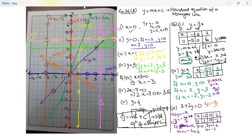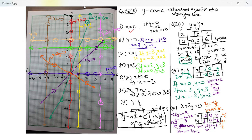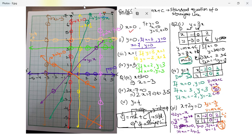Comparing y equal to negative x over two with y equal to mx plus c: c is zero, and m is negative one-half. Previously the slope was positive — m equal to three and m equal to one. Now m is negative, so this line is slanted in the opposite direction. The slope of this line is negative while the slopes of the first two lines were positive.